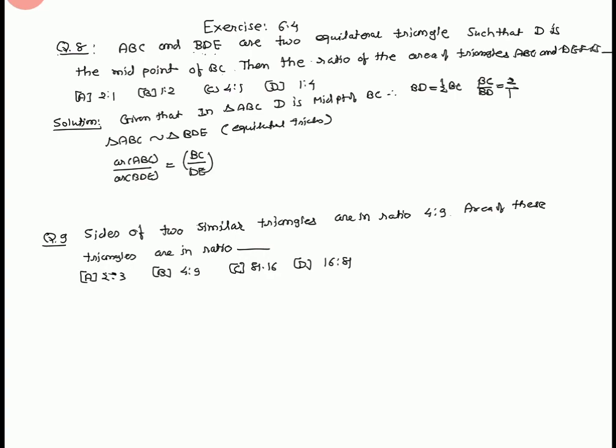Equal to 2 upon 1 whole square equal to 4 upon 1. Therefore area of ABC ratio area of BDE equals 4 ratio 1. C's option is the answer.